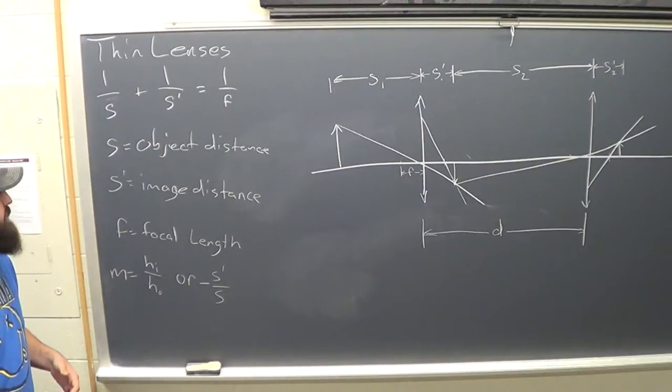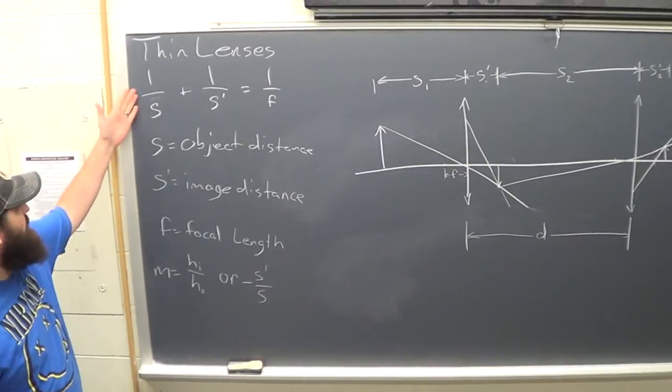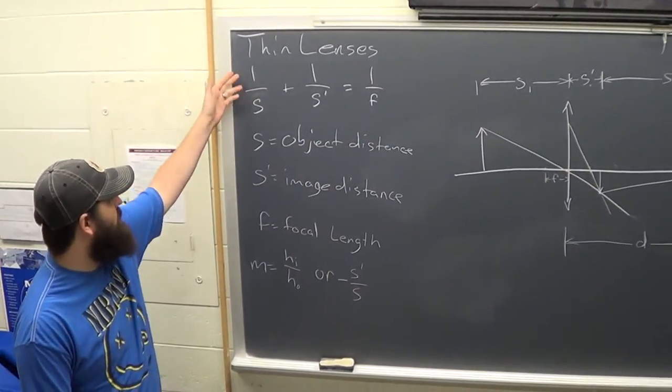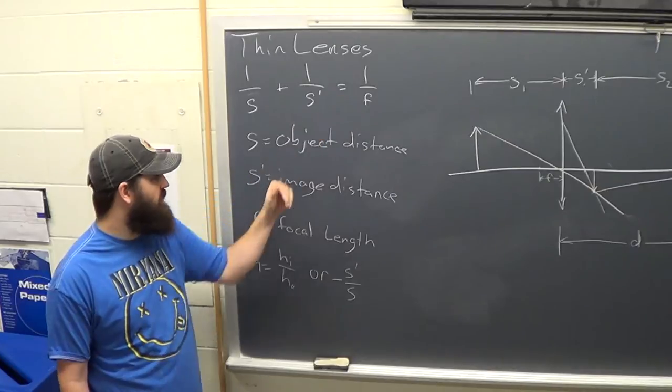Okay, so for the lab this week we're doing thin lenses. The equation that we'll be using is 1 over S plus 1 over S prime equals 1 over F.